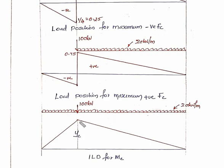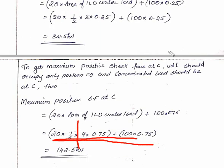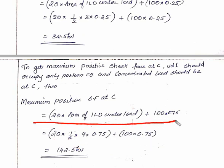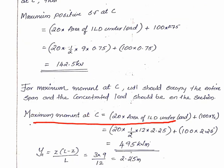Maximum moment at C equals 100 times ordinate value at C plus uniformly distributed load times area of ILD under load. Calculate 20 times 1/2 times 12 times the height at C for maximum moment.